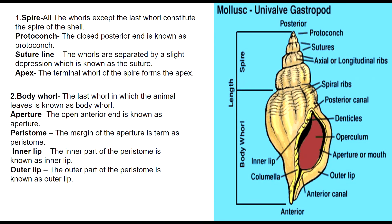The basic Gastropoda body is divided into two main body parts: spire and body whorl. The spire includes the protoconch, suture line, apex, and spires, as these mostly show the ornamentation.